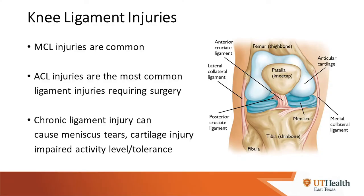Looking at knee ligament injuries, we focus primarily on four ligaments. The medial collateral ligament is the most commonly injured and rarely requires surgery because it is outside of the knee joint proper and has the capacity to heal. The anterior cruciate ligament and posterior cruciate ligament are within the knee joint and unfortunately cannot heal because they are bathed in joint fluid, which compromises their ability to heal.